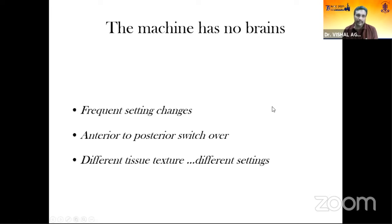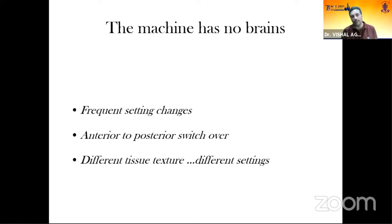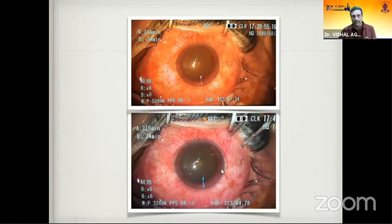The machine has no brains — you need frequent settings changes and anterior-to-posterior switchover. There are multiple modes for saving — mode one, mode two — and you can switch from anterior to posterior by pressing a button, but you still need finer settings adjustments for different tissue textures.